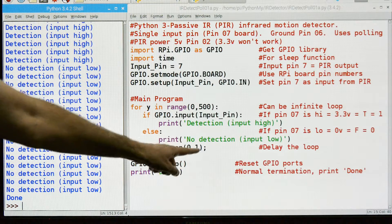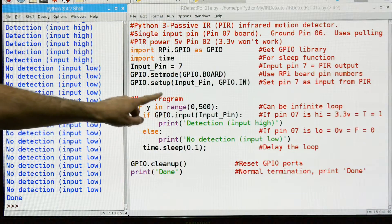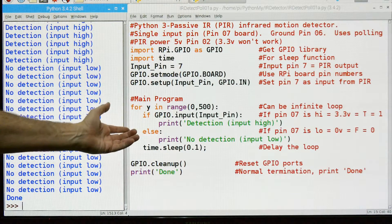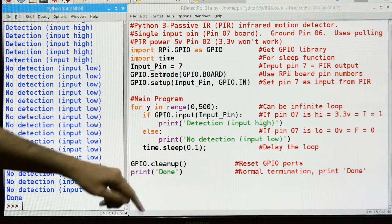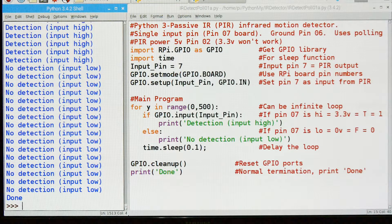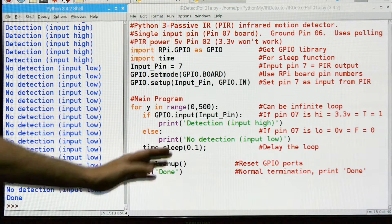Otherwise, we're going to print no detection. Which is what you see down here. And we're just going to keep checking and checking. This is why it's called polling. We're going to keep polling the device until we see something. Or until it runs out of time in my case.